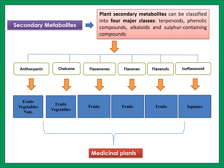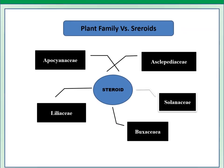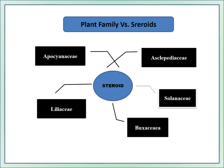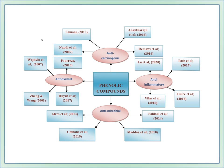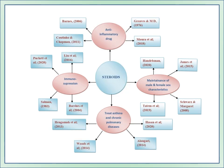Anthocyanins are found in fruits, vegetables, and nuts. Then there are flavones, flavonols, and isoflavonols — these are the parts of plants, and their availability makes plants medicinal. As per family, if we want to search for steroids, we think about Euphorbiaceae, Asclepiadaceae, Solanaceae, Buxaceae, and Liliaceae. The industrial uses include wastewater treatment, leather industry, dyeing industries, food extractives, and veterinary applications. Phenolic compounds, steroids, saponins, tannins, and terpenes all have specific properties.